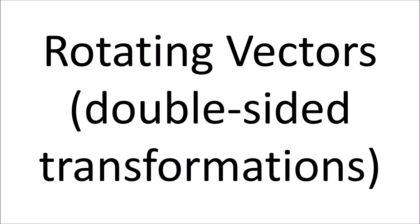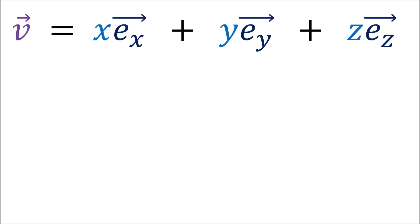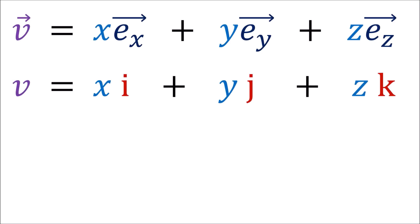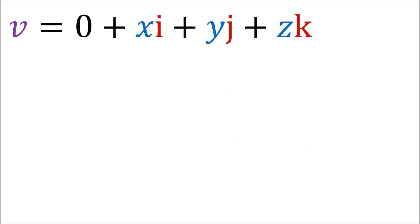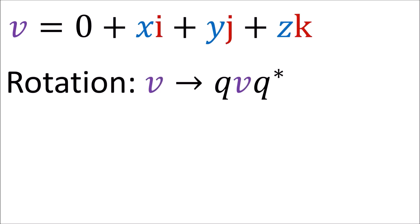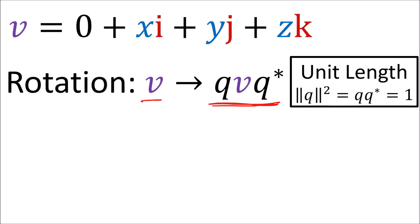So how does this fit into rotating vectors? When rotating with quaternions, we can write a vector v by replacing the xyz basis vectors with i, j, and k. So we get a quaternion with only pure imaginary parts and no real part. We rotate v with a double-sided transformation involving a unit quaternion q, which is a quaternion with length 1.